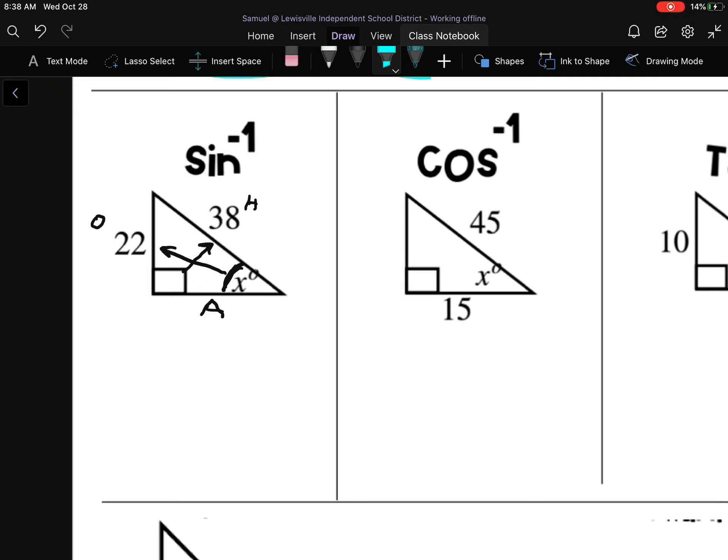So what two sides do I have numbers for? I have the O, and I have the H. Now, what was O and H? You remember from yesterday, O and H go with sine. Sine is O over H.